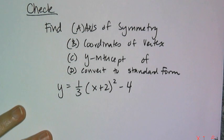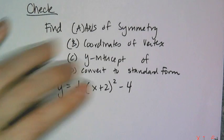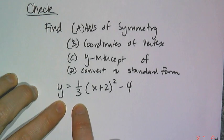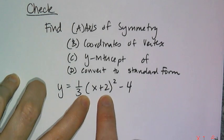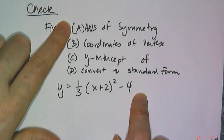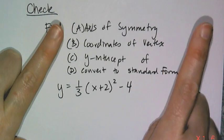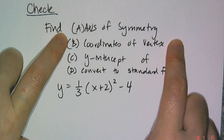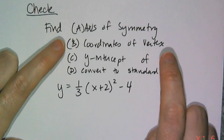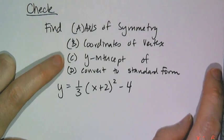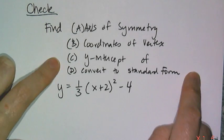And now for your check I want you to do 4 things to this equation: y equals 1/3 times the quantity x plus 2 squared minus 4. I want you to find the equation for the axis of symmetry, I want you to state the coordinates of the vertex, I want you to find the y-intercept, and then I want you to convert it to standard form.